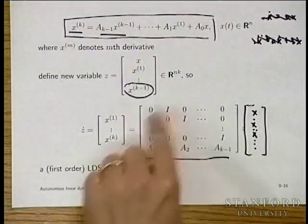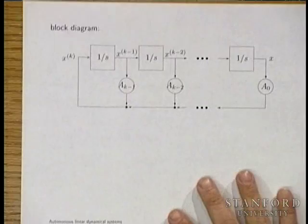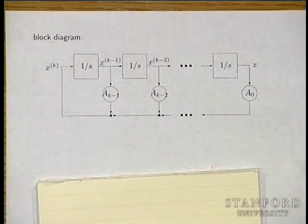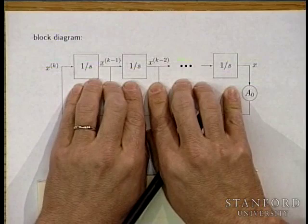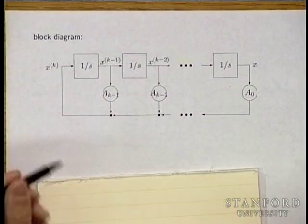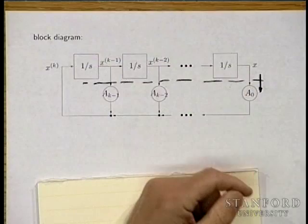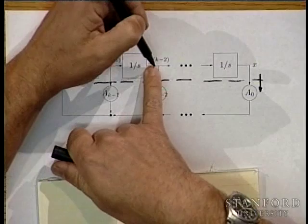We should also mention linearization as a general source of autonomous linear dynamical systems. In general, you get nonlinear systems of the form x-dot equals f(x). An equilibrium point is where f(xe) = 0. At an equilibrium point, the derivative is zero, so you stay there — it's a constant solution of the differential equation.